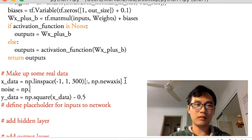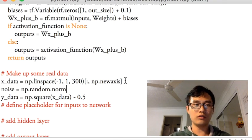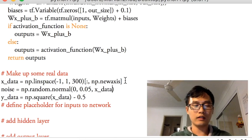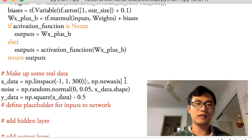So noise equals numpy.random.normal with a mean of zero and standard deviation of 0.05, and the shape will look like the x_data shape, so I just put the shape of x_data.